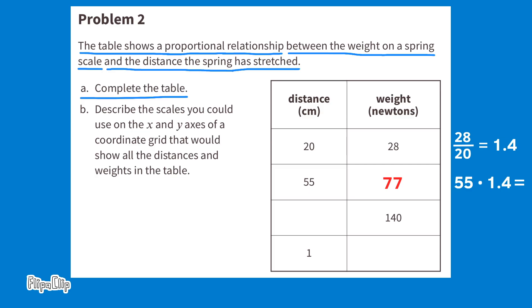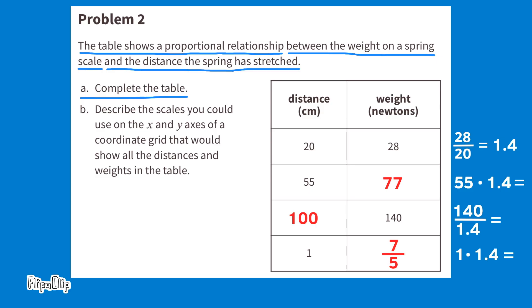140 is 1.4 times larger than the unknown distance, so 140 divided by 1.4 equals 100 centimeters. For the last row, the distance is 1 centimeter: 1 times 1.4 equals 1.4 newtons. 1.4 is equivalent to 14 tenths, or simplified to 7 fifths. In fact, 20/28, 55/77, 140/100, and 7/5 all equal 7 fifths — that's what makes their relationships proportional. The weight in newtons is 7 fifths times greater than the distance in centimeters.